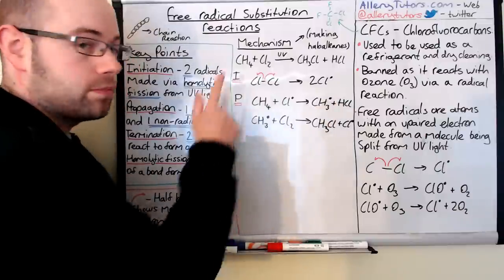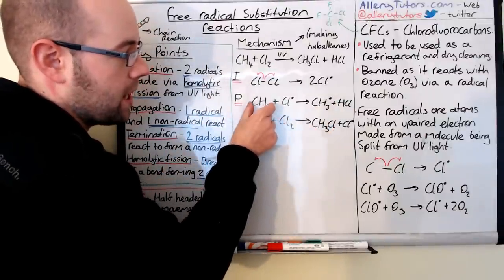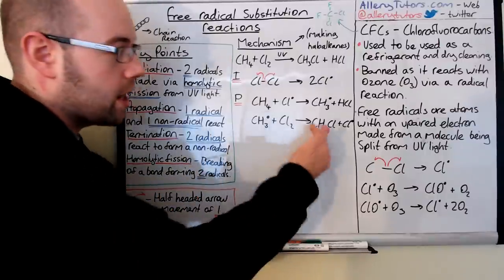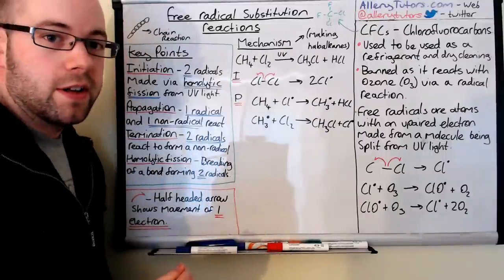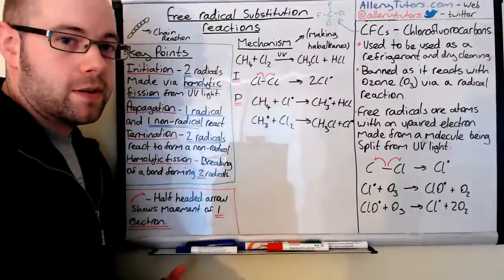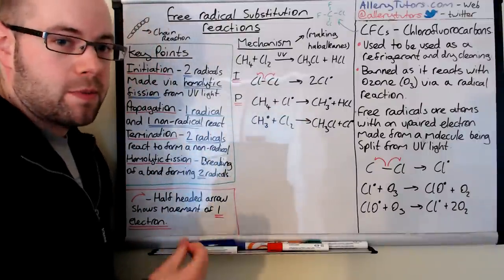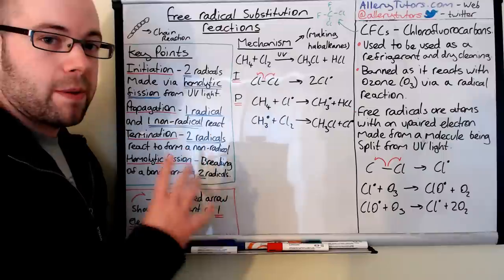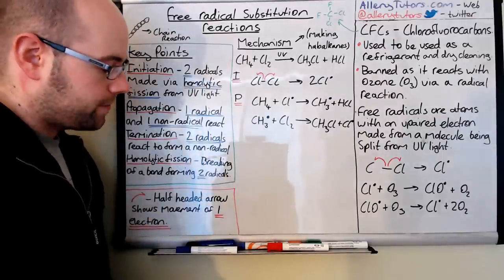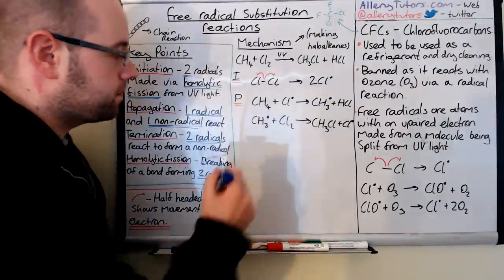This chain reaction will keep going and going. Sometimes the Cl dot can react with the chloromethane product to form dichloromethane, and then dichloromethane can react with another Cl dot radical to form trichloromethane. Effectively, you're forming impure versions of your haloalkanes — you don't just get chloromethane. Because radicals are really reactive and will react with just about anything, including the product you've made, they're not very good for producing a specific product.